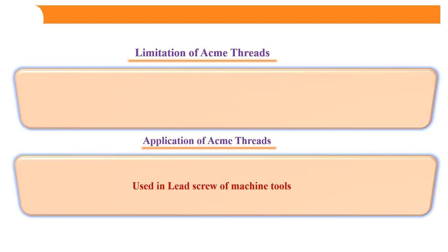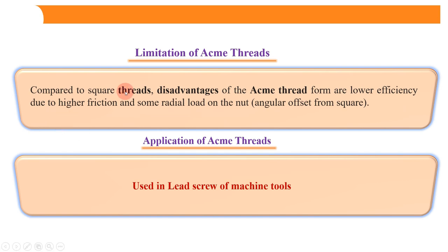Now, the limitations of Acme threads compared to square threads: the disadvantage is that they have lower efficiency due to higher friction and some radial load on the nut. As we saw in the previous video, square threads have maximum efficiency, so Acme threads are not as efficient as square threads. The application of Acme threads is that they are used in the lead screw of machines. On a lathe machine, we see one lead screw, and on that lead screw, Acme threads are cut.